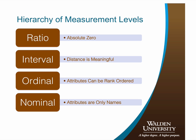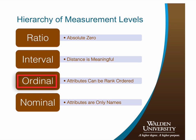Let's take a quick moment to revisit the hierarchy of the four scales of measurement. The highest level is the ratio level of measurement, which has the attribute of a true zero value. Next, the interval level has attributes of equal and meaningful distances, but lacks a true zero attribute. Then we have the ordinal level of measurement that has the attribute of rank order. Finally, the lowest level of measurement is the nominal level that has the attribute of name only.